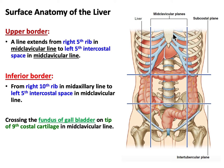Now let me talk about the surface anatomy of the liver — how can we determine where the liver is on the body surface? I'll show you the upper border and the lower border of the liver. To define the liver's surface projection, we first determine the upper border, then the lower border.